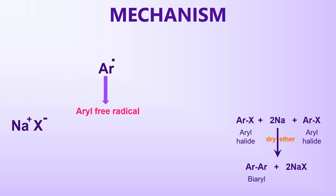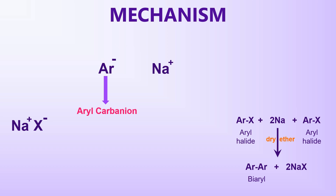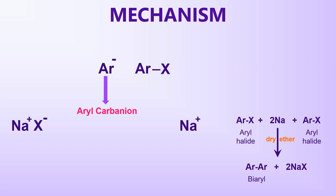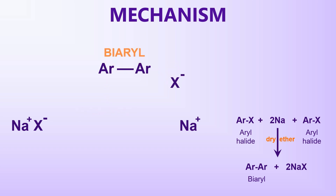Subsequently, another electron is transferred from a sodium atom to the aryl free radical, leading to the formation of an aryl carbanion. The aryl carbanion, thus generated in the previous step, replaces the halide group in another aryl halide through nucleophilic substitution, resulting in the formation of a bi-aryl compound.